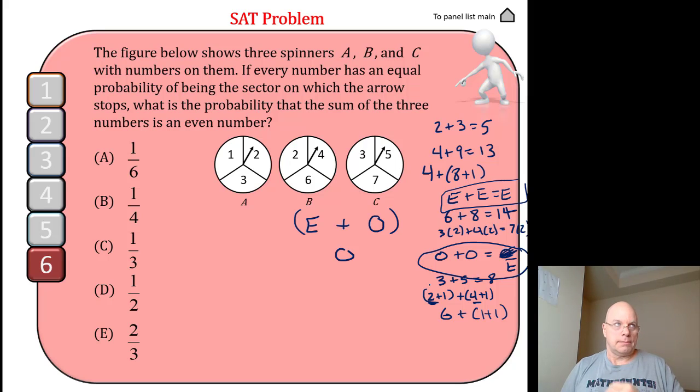So even plus even is even, odd plus odd is even, even plus odd is odd. It might remind you of multiplying and dividing integers. Negative times negative is positive, negative times positive is negative. So when the signs are different you get a negative result, when the signs are the same you get a positive result. When you're adding even and odd numbers, if you're adding numbers with the same parity you get an even sum. When you're adding numbers with different parities you get an odd sum.